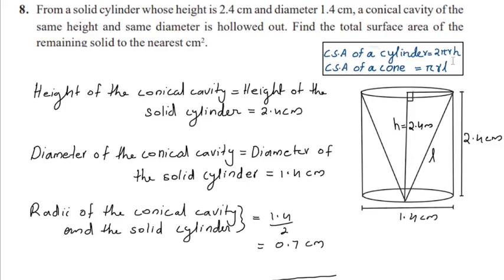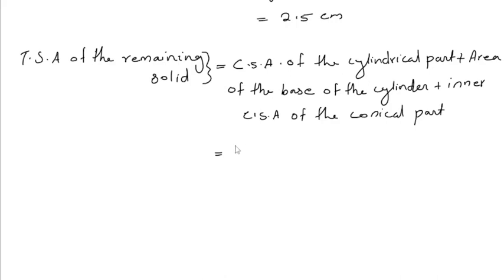Curved surface area of this cylinder is 2 pi r h. So CSA of the cylindrical part is 2 pi r h plus the area of the base of the cylinder is pi r square plus the inner CSA of the conical part is pi r l. Here pi and r are common. Inside the bracket 2 h plus r plus l.